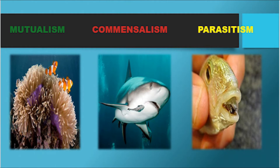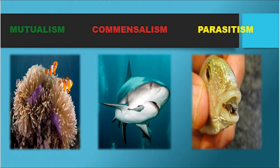Under commensalism, a good example is a picture of a shark and Remora fishes. Remoras eat scraps of prey dropped by the shark while they are eating. These Remoras also feed off parasites on the shark's skin and its mouth. In this case, Remoras benefit while the sharks are unharmed.